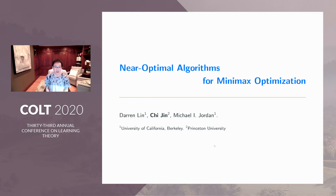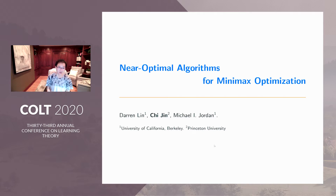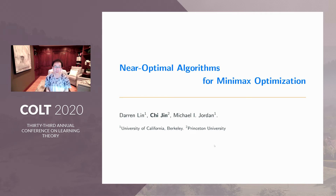Hello, everyone. I'm Qi Jing. Today I'm going to talk about our paper on near-optimal algorithms for minimax optimization. This is joint work with Darren Ling and Michael Jordan, both at UC Berkeley. Michael Jordan was my PhD advisor.